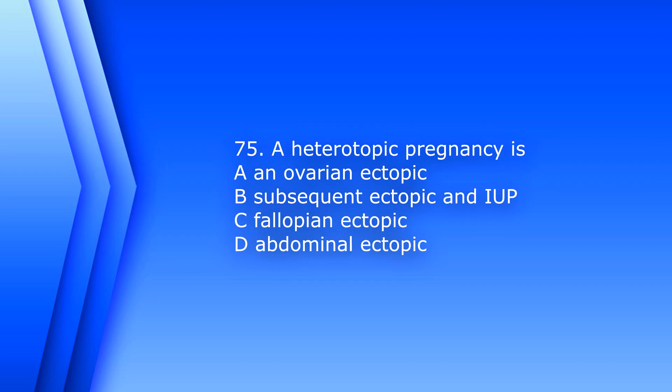Question 75. A heterotopic pregnancy is: A. An ovarian ectopic, B. Simultaneous ectopic and intrauterine pregnancy, C. Fallopian ectopic, D. Abdominal ectopic. The answer is B — simultaneous ectopic and intrauterine pregnancy, meaning an ectopic pregnancy and a live intrauterine pregnancy at the same time.